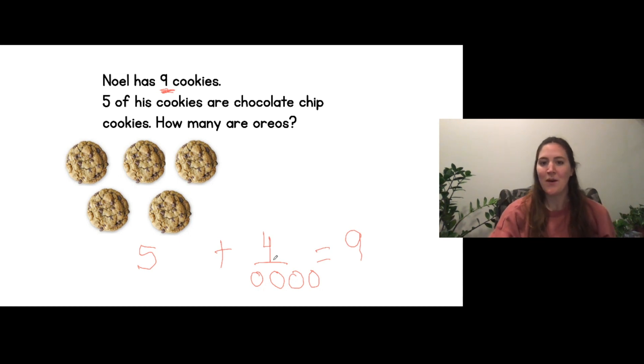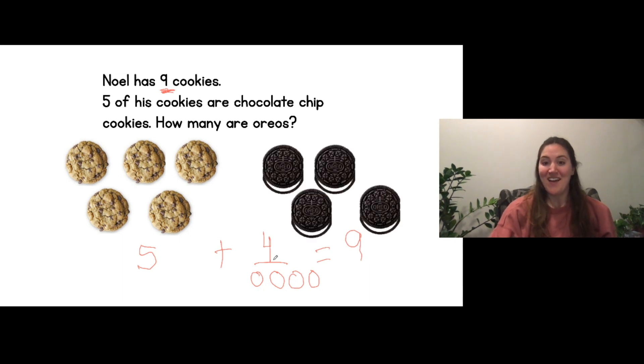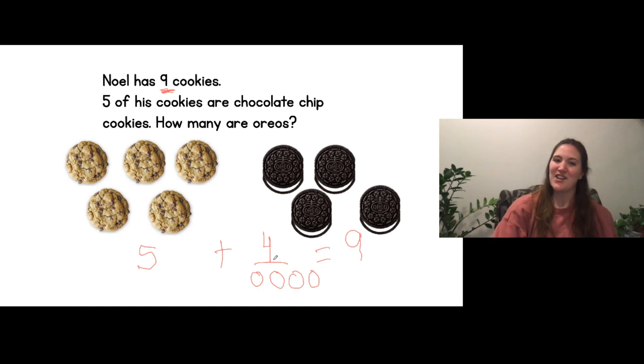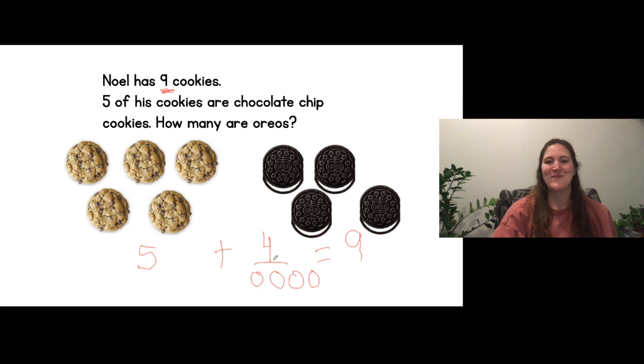Let's see if I was right. Four of his cookies were Oreos. I figured it out. Five chocolate chip plus four Oreos.